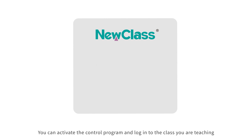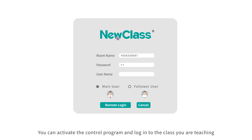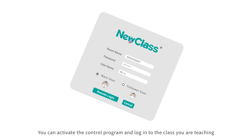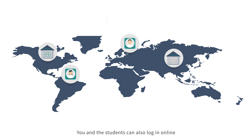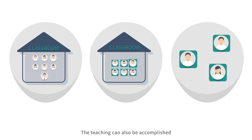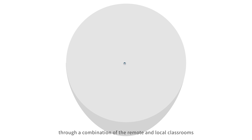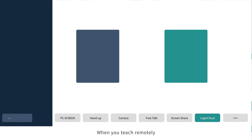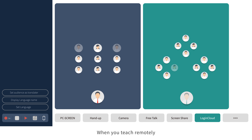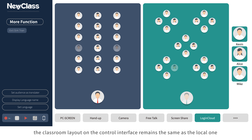You can activate the control program and log in to the class you are teaching. You and the students can also log in online. The teaching can also be accomplished through a combination of the remote and local classrooms. When you teach remotely, the classroom layout on the control interface remains the same as the local one.